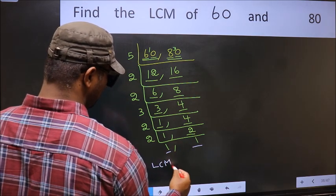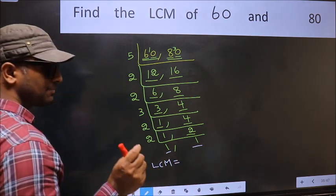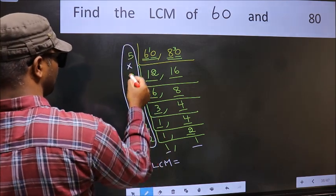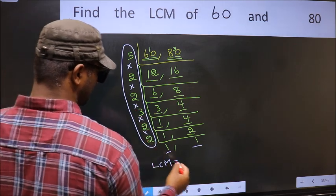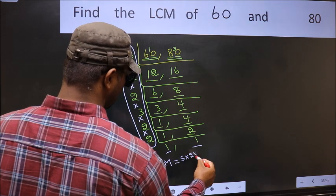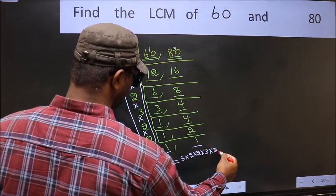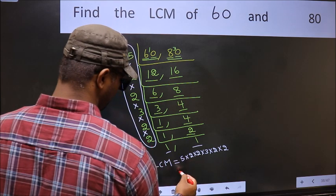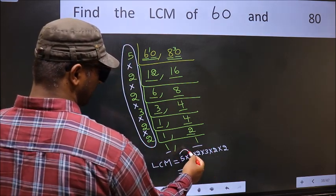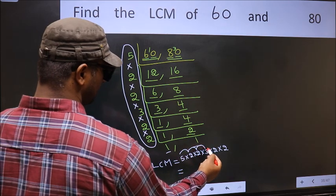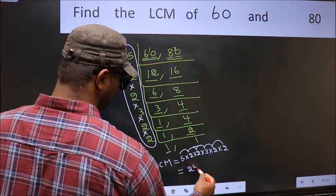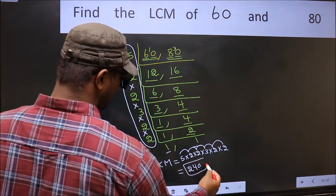So our LCM is the product of these numbers: 5 × 2 × 2 × 2 × 3 × 2 × 2. Let us multiply these numbers. 5 × 2 = 10, 10 × 2 = 20, 20 × 3 = 60, 60 × 2 = 120, 120 × 2 = 240. 240 is our LCM.